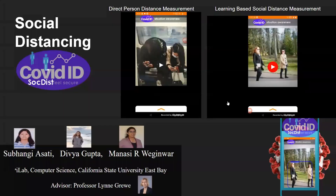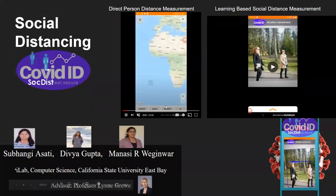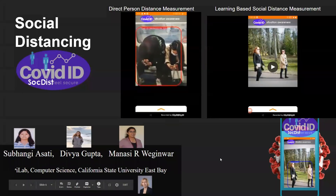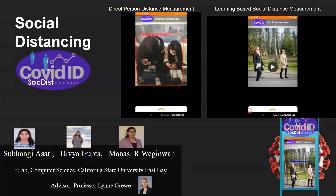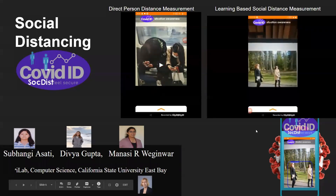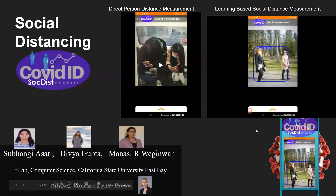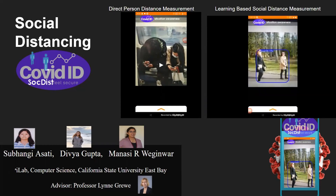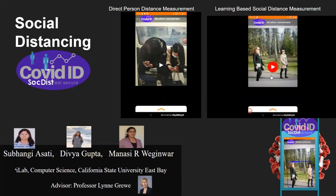The next module is the Social Distancing module. Common health protocol states that humans should try to stay at least six feet away from each other in order to minimize their risk of spreading COVID-19. The Social Distancing module uses machine learning to perform detection of proper social distancing according to two means. The first attempts to measure the actual distance between two individuals as a numerical value. The second system attempts to learn more general categories of good, medium, or bad social distancing measures.